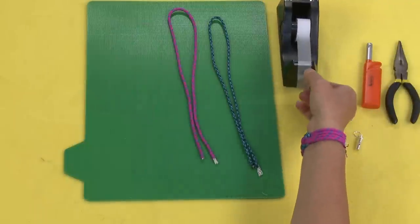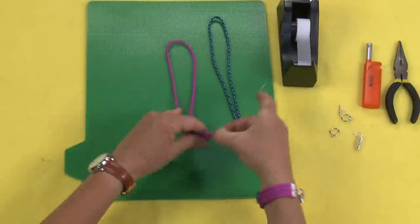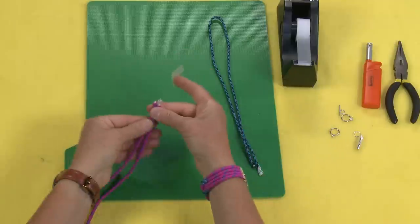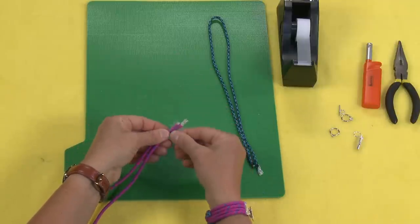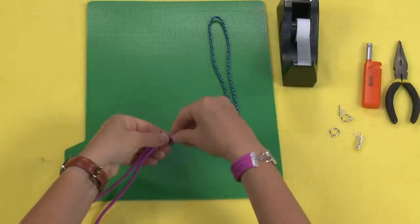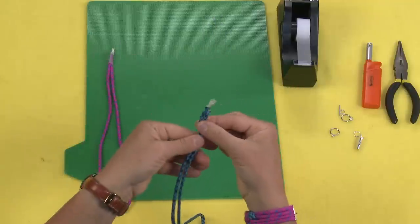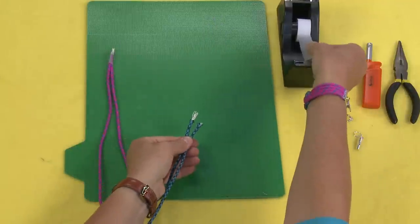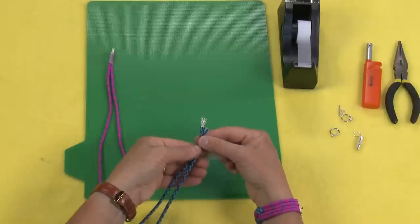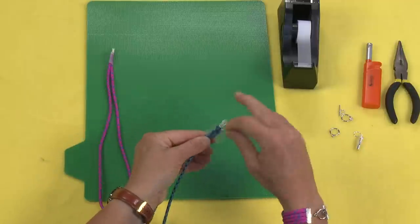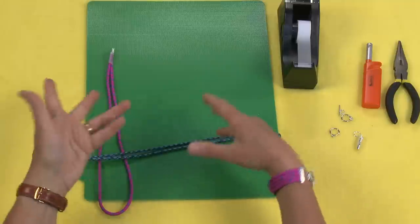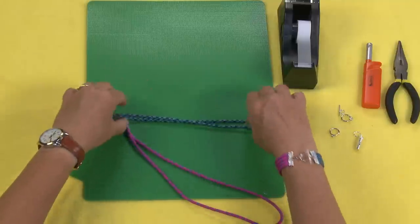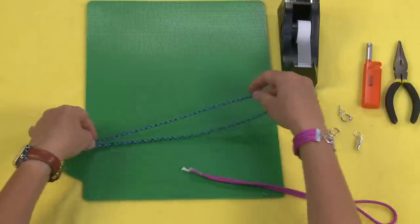First thing we're going to do is tape the ends of our paracord. You want to put it end to end and place a piece of tape right around the end, and do it on the other one as well. If you are using longer paracord, three or four feet, it's probably not necessary to tape these, but when it's short pieces like this they have a tendency to roll on each other. So it's much better if you tape those edges.